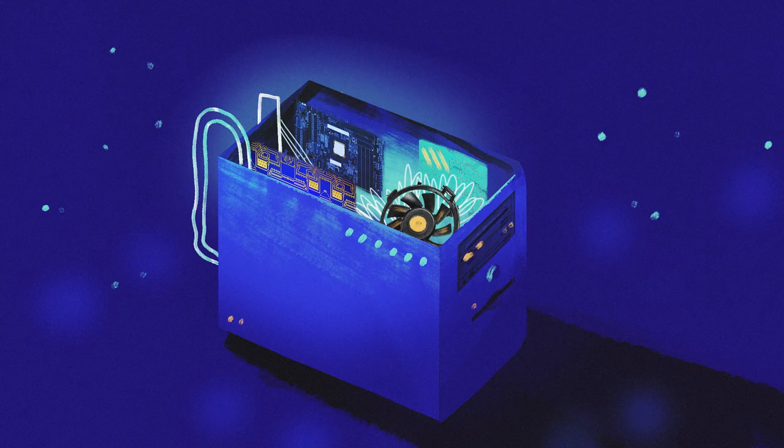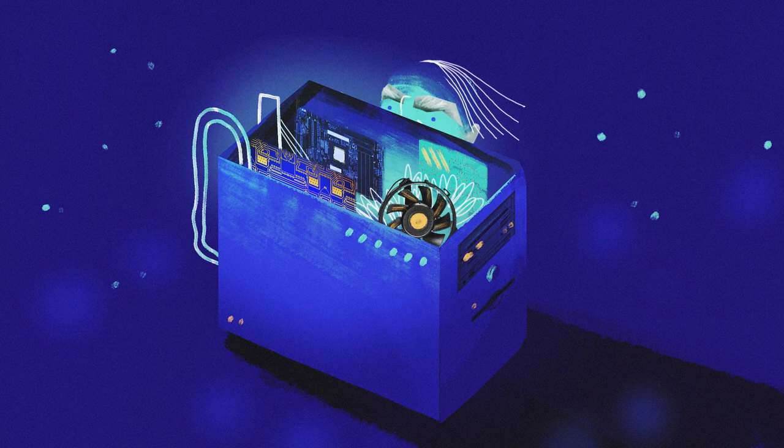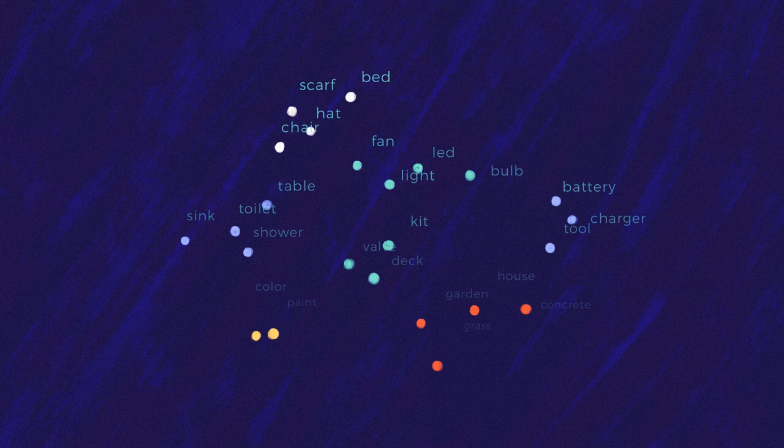So, how does a computer understand the original sentence without that big old linguistically dextrous brain of yours? For accurate machine translation and natural language processing, we have word embeddings to thank.